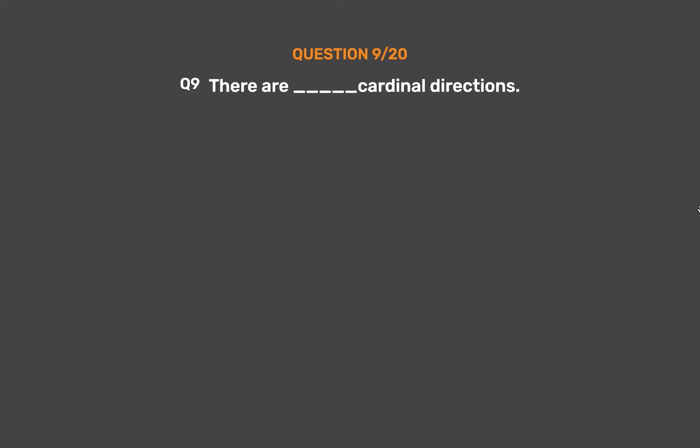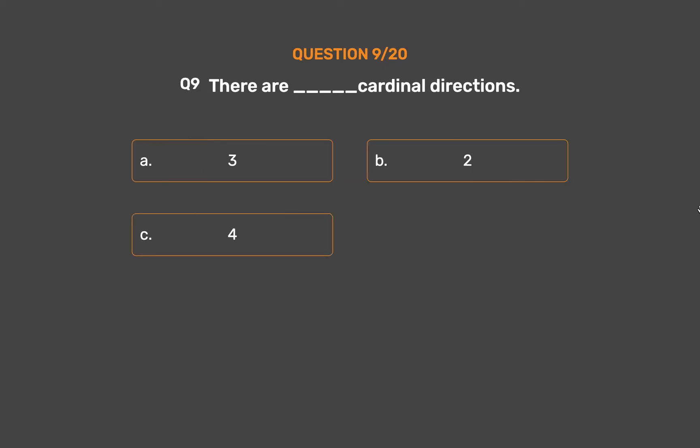Question number 9. There are __ cardinal directions. Option A: 3. Option B: 2. Option C: 4. Option D: 8.